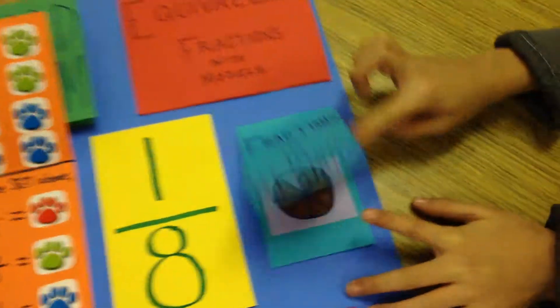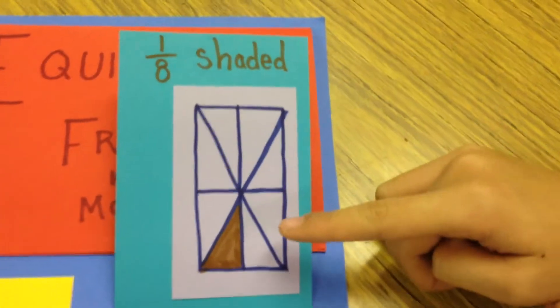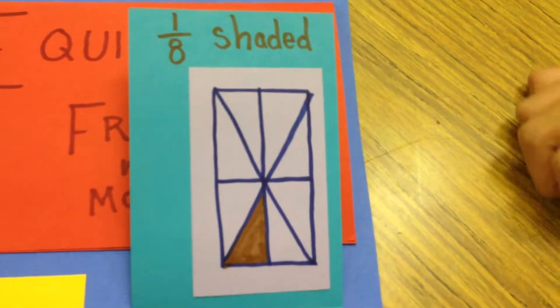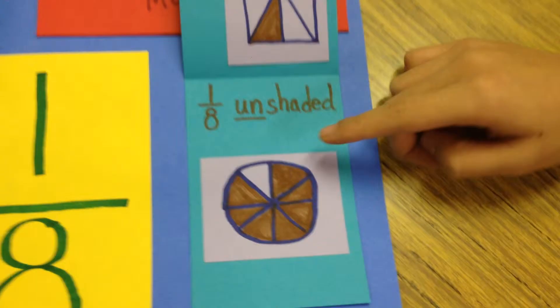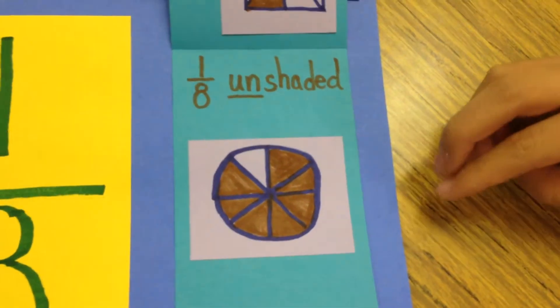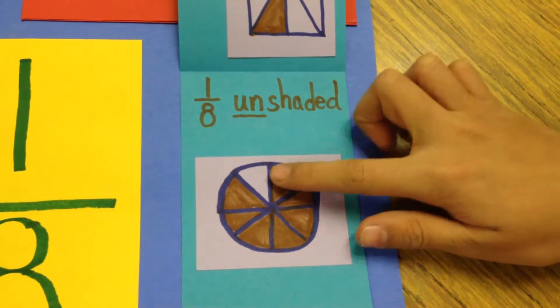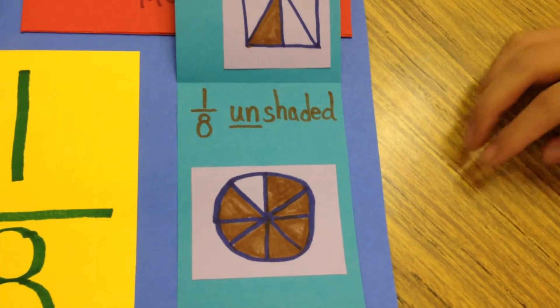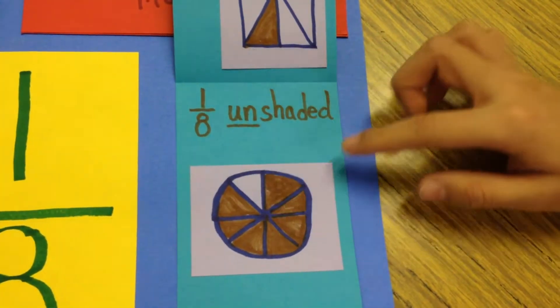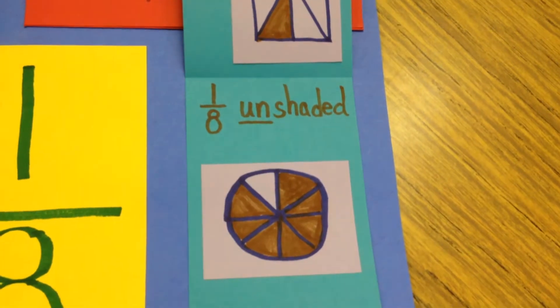And here are the fraction regions. One of the eighths is unshaded and seven of them are shaded.